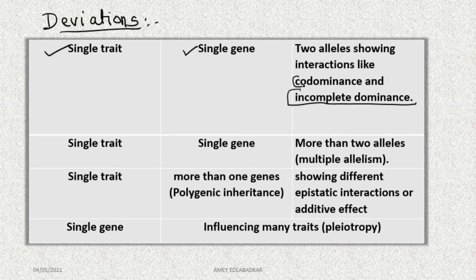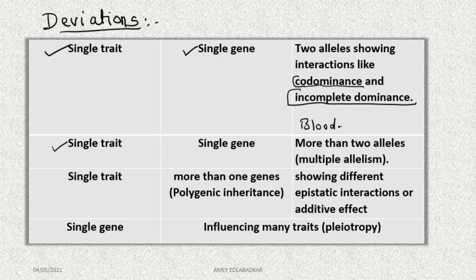The second deviation: the second part was single trait, single gene, but this time there are more than two alleles — as in blood group. The gene that regulates blood group is called isoagglutinin, represented as 'I'. It has three alleles: IA, IB, and IO — sometimes written as small i.